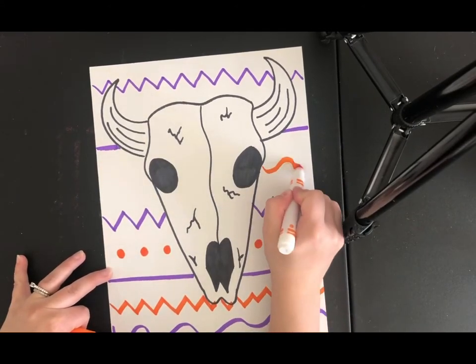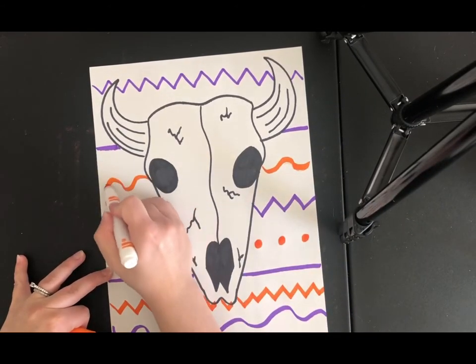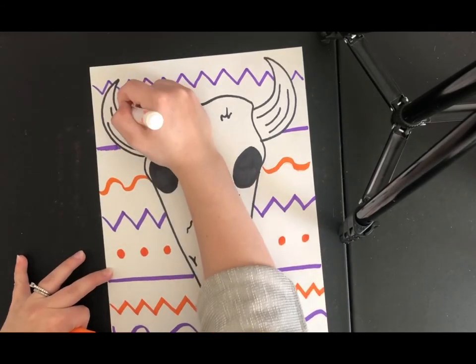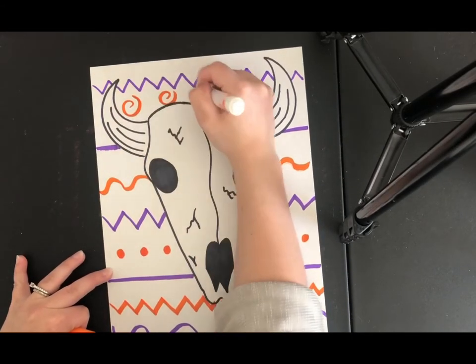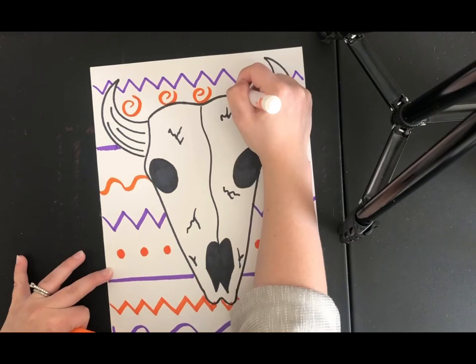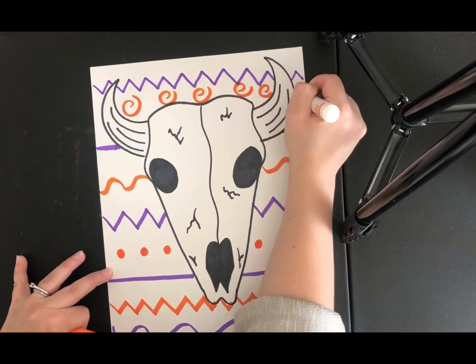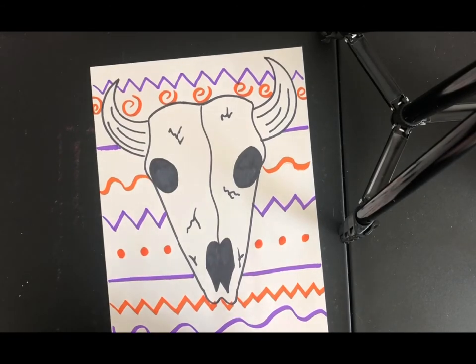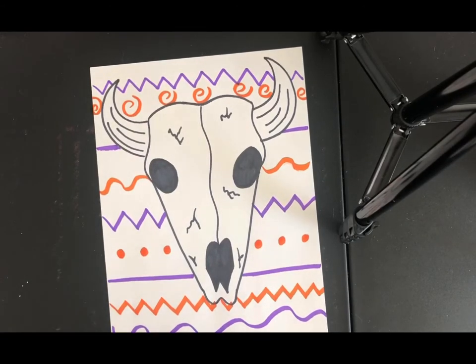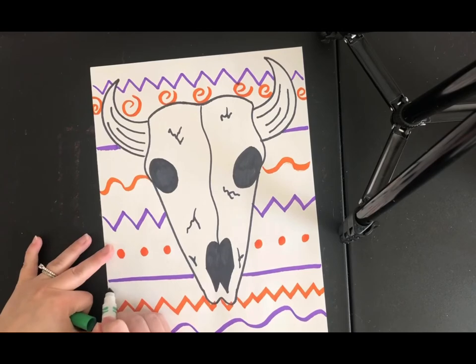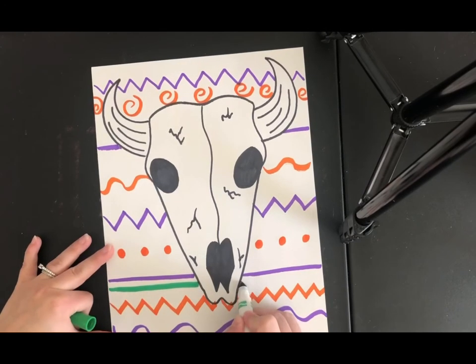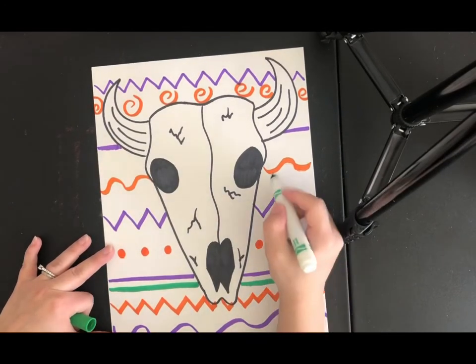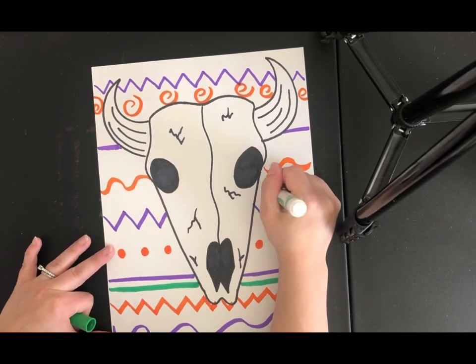Add some zigzag lines, maybe wavy lines, could add swirls. Okay. Switch colors again because I really want my background to be nice and colorful. So I'm going to add another straight line here, or maybe, let's see, some stars.